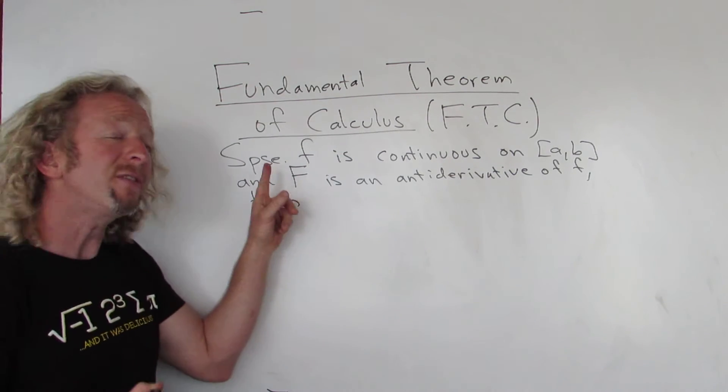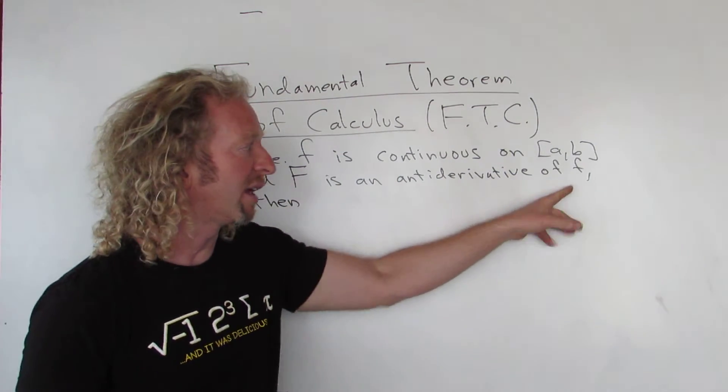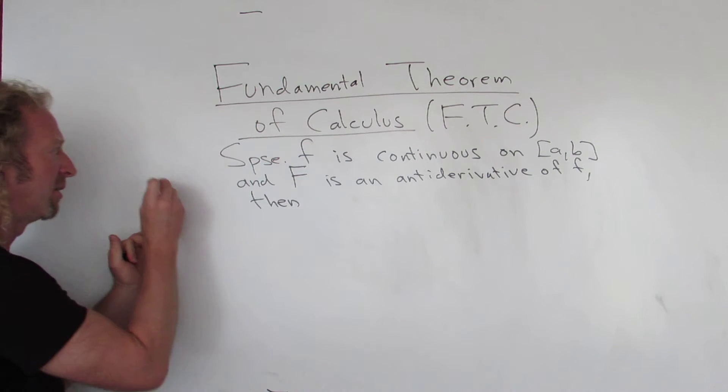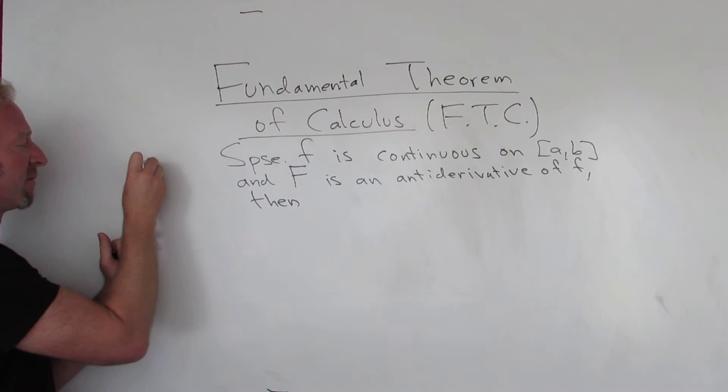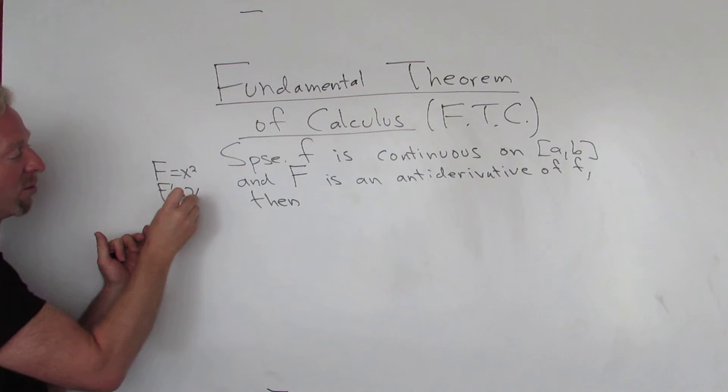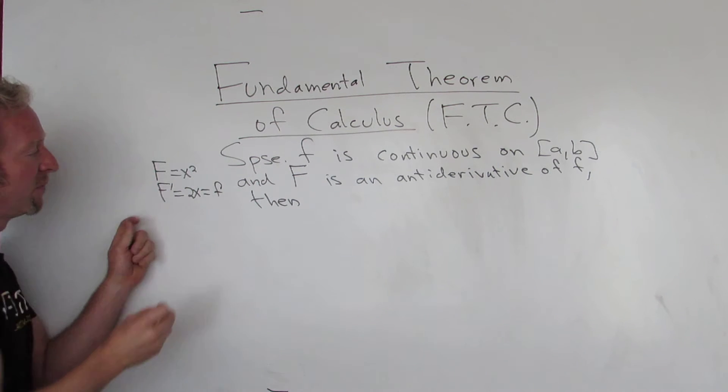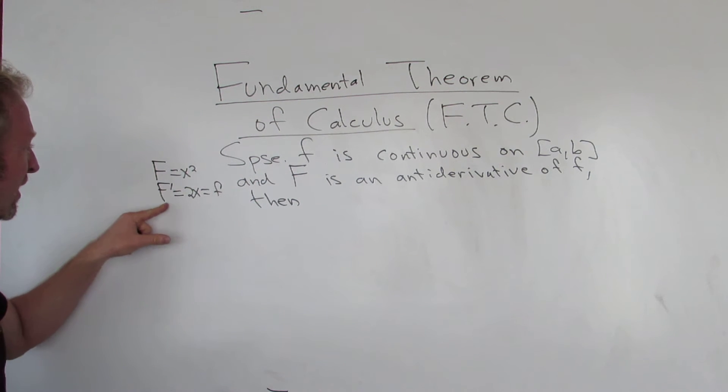That means if you take the derivative of big F, you get little f. So for example, say big F is x squared. So if you take the derivative of big F, you would get 2x via the power rule. This would be little f. So if you take the derivative of big F, you get little f.